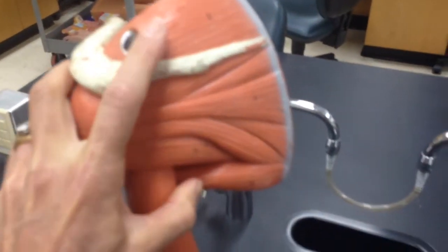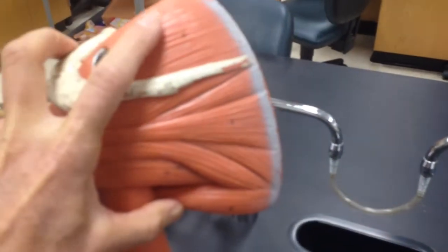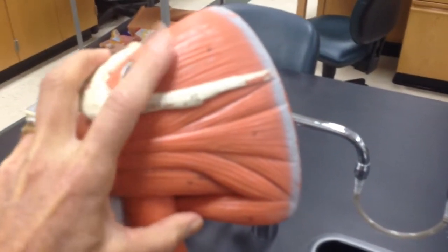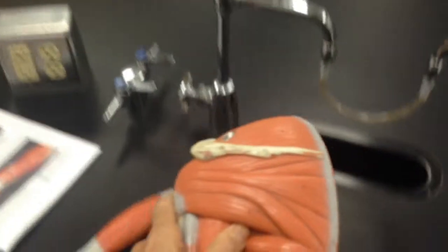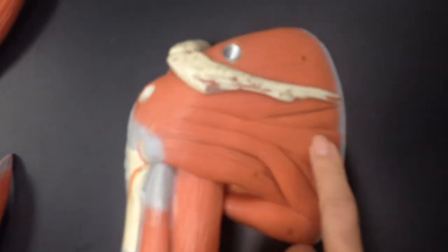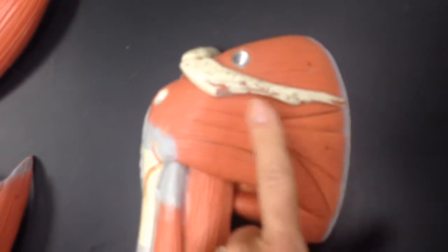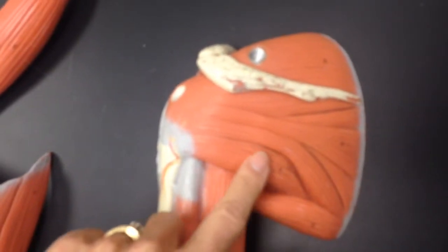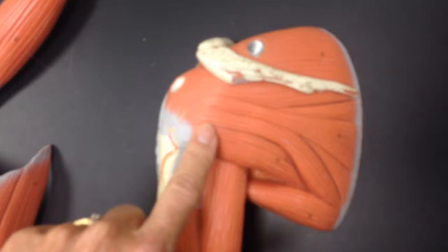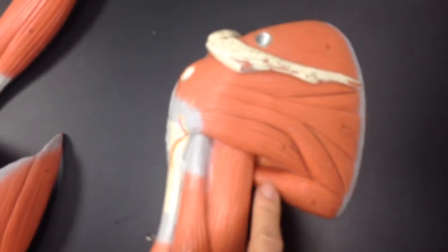you have above the spine of the scapula, the supraspinatus. Below the spine of the scapula is the infraspinatus. Then you have the teres minor on top of the teres major.